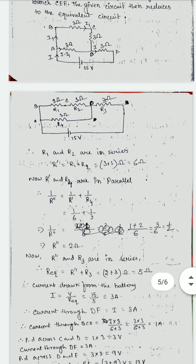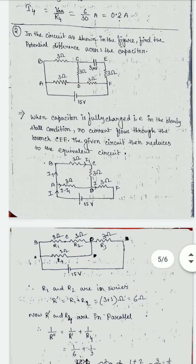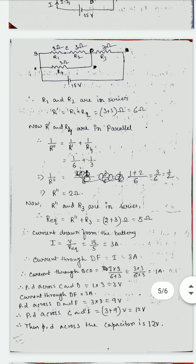Total potential difference across the capacitor — across C to F — we go through the path CDF, because branch CEF carries no current. So potential difference from C to F = potential difference across CD + potential difference across DF = 3 + 9 = 12 volts. So the potential difference across the capacitor is 12 volts. Sometimes this numerical will come where the potential difference is given as 12 volts and you are asked to find the value of the battery EMF, which is 15 volts.